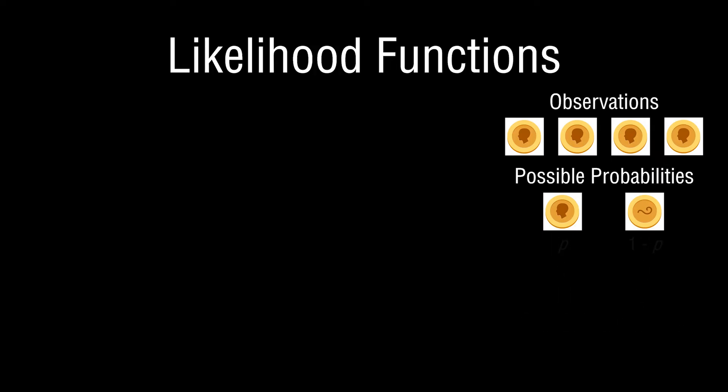Let's consider the probability of heads and tails as uncertain. Let's say the probability of heads is p, and therefore the probability of tails is one minus p. So if it's 100% heads, tails is 0%; if it's three-quarters heads, tails is one-quarter. p is the parameter we're trying to figure out and solve for.